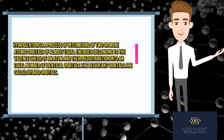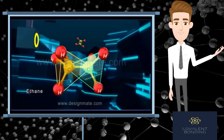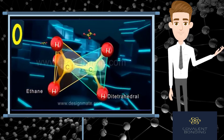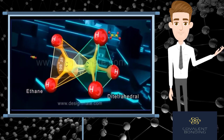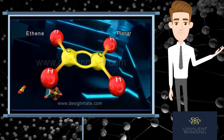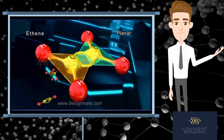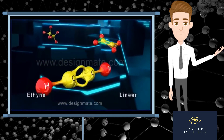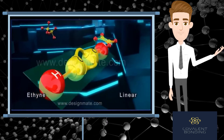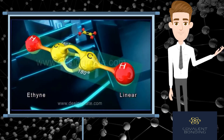Let's watch an animation to clarify this concept. The ethane molecule is tetrahedral and has a bond angle of 109° 28'. Ethene is a planar molecule with a bond angle of 120 degrees, while ethyne is a linear molecule with a bond angle of 180 degrees.